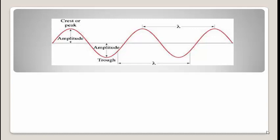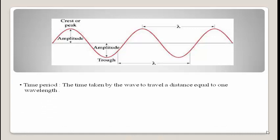The next term is time period. Time period is the time taken by the wave to travel a distance equal to one wavelength. As seen in the diagram, lambda is taken from crest to crest — the time taken to travel from crest to crest is the time period. It can also be defined using trough to trough. Time period is denoted as capital T and is measured in seconds.